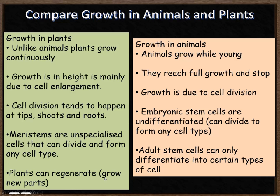Plants can also regenerate — they can grow new parts. If you chop a branch off a tree it can regrow, whereas if you were to chop a person's arm off, the arm wouldn't regrow. Plants have this ability to regenerate because they have meristems — unspecialized cells that can become any type of cell. Humans can't do that because they only have adult stem cells, which can become certain types of cells but are not able to fully regenerate limbs. Similarly, plants can be cloned by taking a cutting, and that is because of these meristems — unspecialized cells.